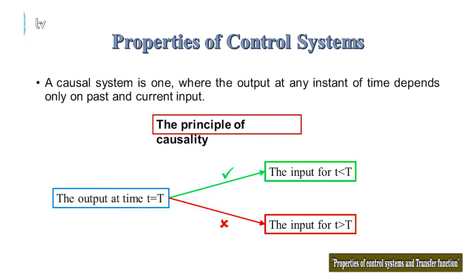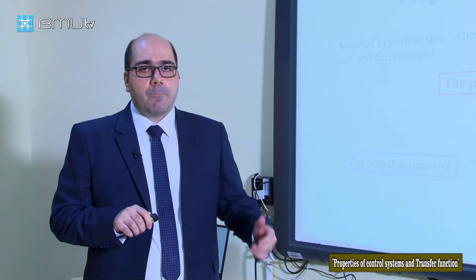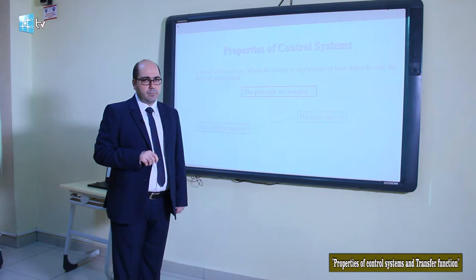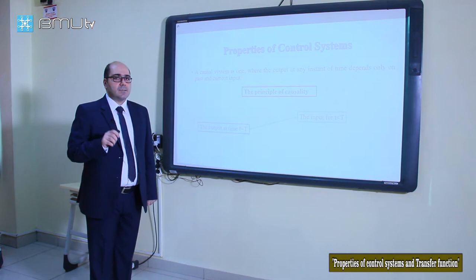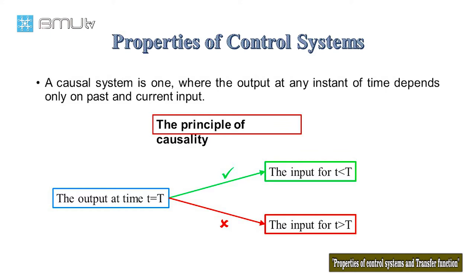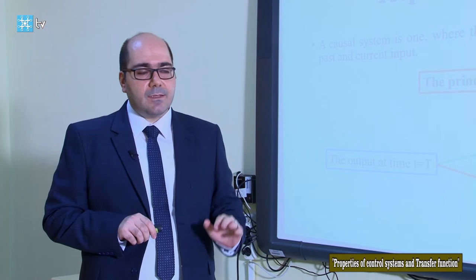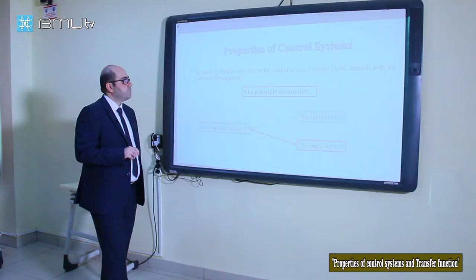We call a system a causal system if the output of the system at any instant of time only depends on the past and current time of input. A causal system does not depend on the future time of the input. This is the principle of causality — each system that depends only on the past and current input, and not on future input, is a causal system.